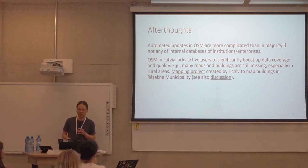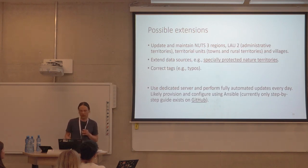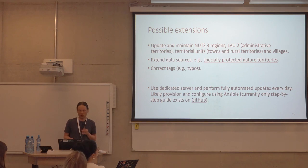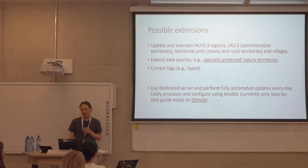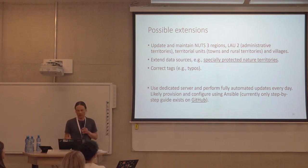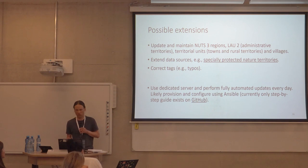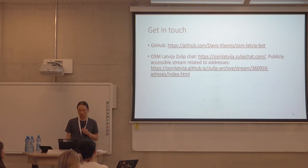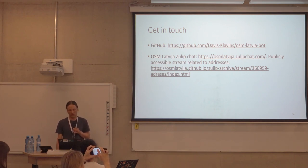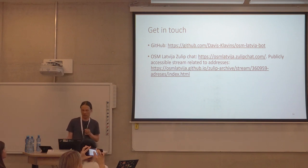The bot can be extended — for example, to update and maintain borders, to extend end sources for especially protected entry areas, to correct tags, and — more importantly — to use a dedicated server and perform fully automated updates every day, because currently it is done semi-automatically every month. Currently also setting up a step-by-step guide to provision and configure using Ansible would be better. The code is linked to GitHub. If you find any bugs, you can file a ticket there. There is also an OpenStreetMap Matrix chat with a specific stream for addresses which is probably available.